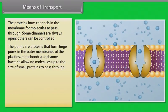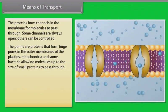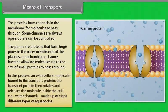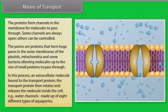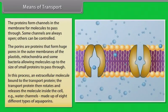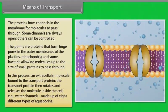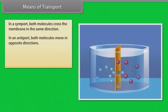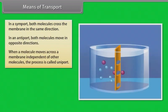Porins are proteins that form huge pores in the outer membranes of plastids, mitochondria and some bacteria, allowing molecules up to the size of small proteins to pass through. In this process, an extracellular molecule binds to the transport protein, which then rotates and releases the molecule inside the cell — for example, water channels made up of eight different types of aquaporins. Some carrier or transport proteins allow diffusion only if two types of molecules move together. In a symport, both molecules cross the membrane in the same direction; in an antiport, they move in opposite directions. When a molecule moves across a membrane independent of other molecules, the process is called uniport.